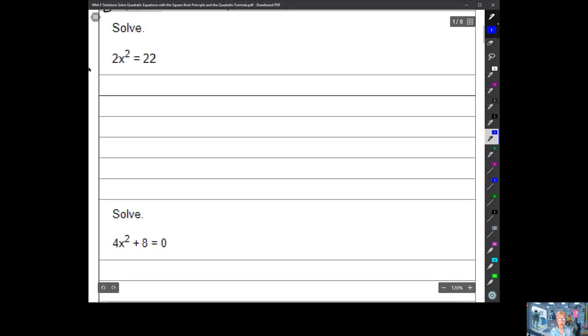Now we have 2x² = 22. We can go ahead and solve that. Divide by 2, divide by 2. x² equals 22.